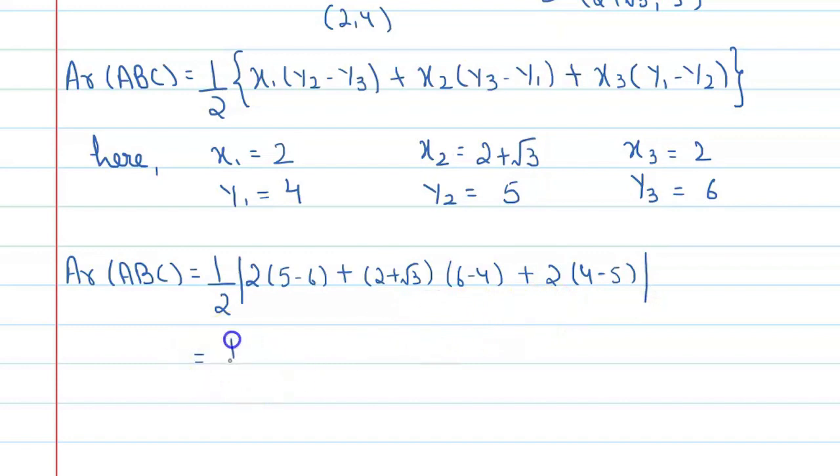Now, 1 upon 2, 5 minus 6 is minus 1. So, 2 into minus 1. Again, this will become (2 plus root 3), and 6 minus 4 is 2. Plus 2, 4 minus 5 again minus 1. Now let's see what value comes from here.